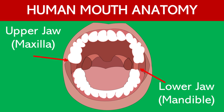Upper and lower jaw — maxilla and mandible. The upper jaw, or the maxilla, holds the upper teeth. And the lower jaw, or the mandible, holds the lower teeth. These sections move to help you chew and talk.